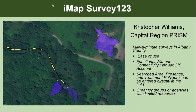There are additional points in the form where you can add a treatment or add a presence, and you can do that as points or polygons — sometimes as the entire searched area or as a smaller component inside it. We find it to be a really nice tool for its ease of use. It's functional without connectivity, you don't need the ArcGIS program, and your searched area, presence, and treatment polygons can all be done directly in the field. That was my short rundown of IMAP Survey 123.